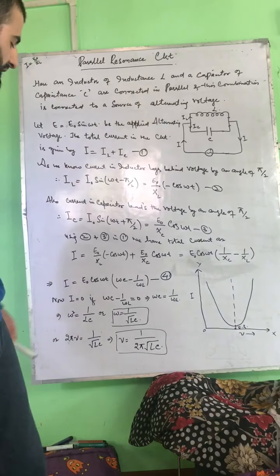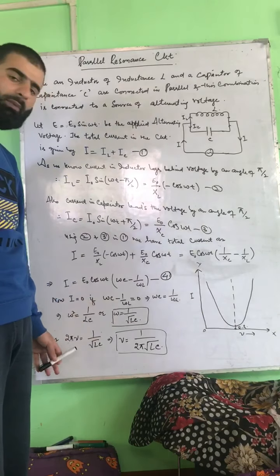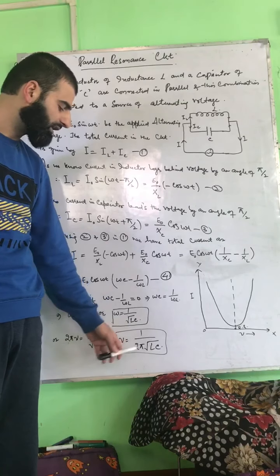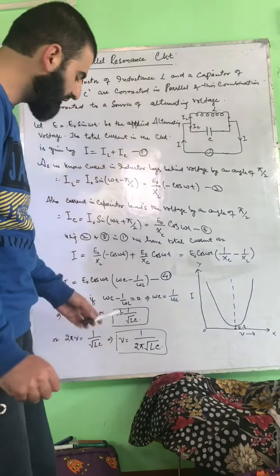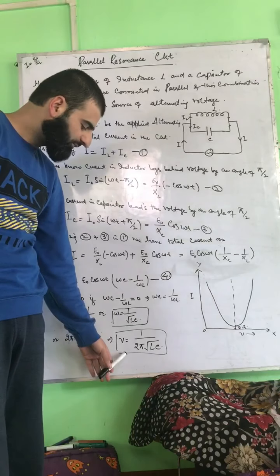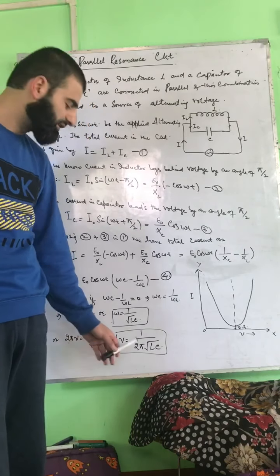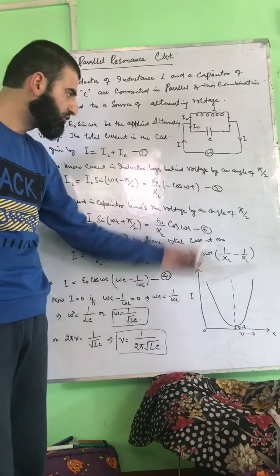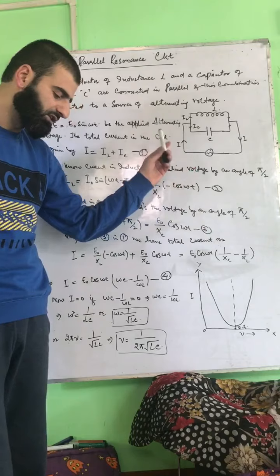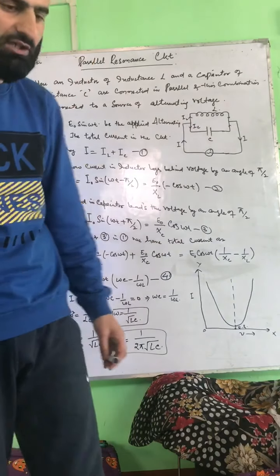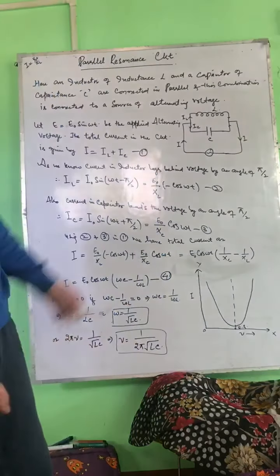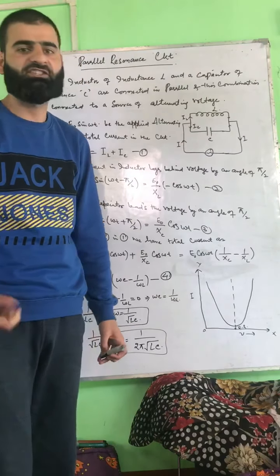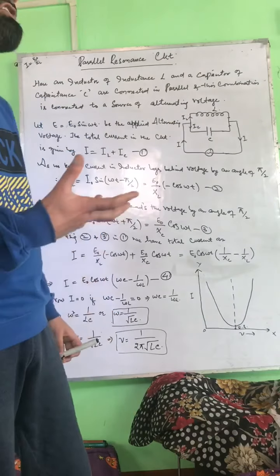This is the equation for the resonant angular frequency. Replacing ω with 2πf, we get the resonant frequency: f = 1 / (2π√(LC)). This frequency is the natural frequency of the circuit, and when the applied voltage frequency equals this natural frequency, resonance takes place.